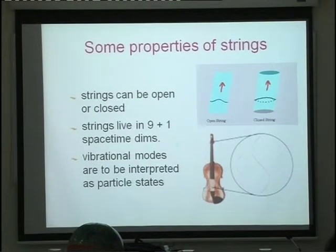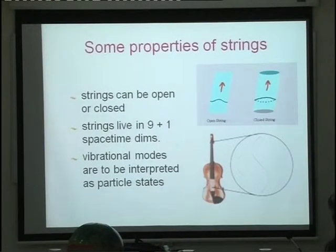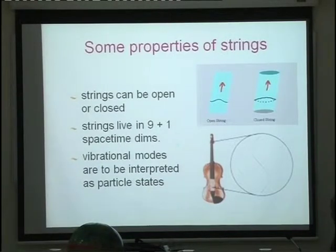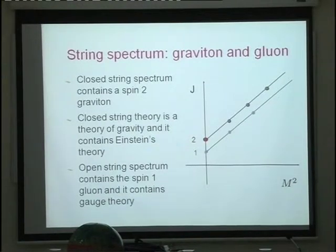These modes get interpreted in this theory as particles. String theory has lots and lots of particles — very massive particles which correspond to these modes. The low-lying particles are the particles of our world. Whenever you have an object in physics you ask what is the spectrum — what are its modes like.